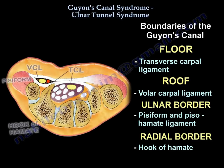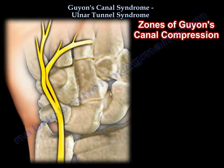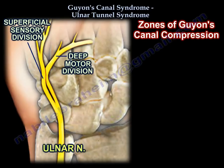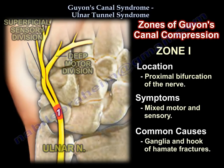Here is a cross section that illustrates the boundaries of Guyon's Canal. What are the zones of Guyon's Canal compression? Zone 1 — Location: proximal bifurcation of the nerve. Symptoms: mixed motor and sensory. Common causes: ganglia and hook of hamate fractures.